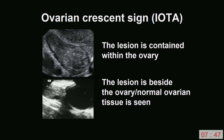The ovarian crescent sign is not used in any IOTA method, but it is worth mentioning. The IOTA definition of the ovarian crescent sign is that normal ovarian tissue is visible. For example, if a lesion is contained within the ovary and surrounded by normal ovarian tissue, or if a completely normal ovary is visible adjacent to a paraovarian cyst, we say the ovarian crescent sign is positive.